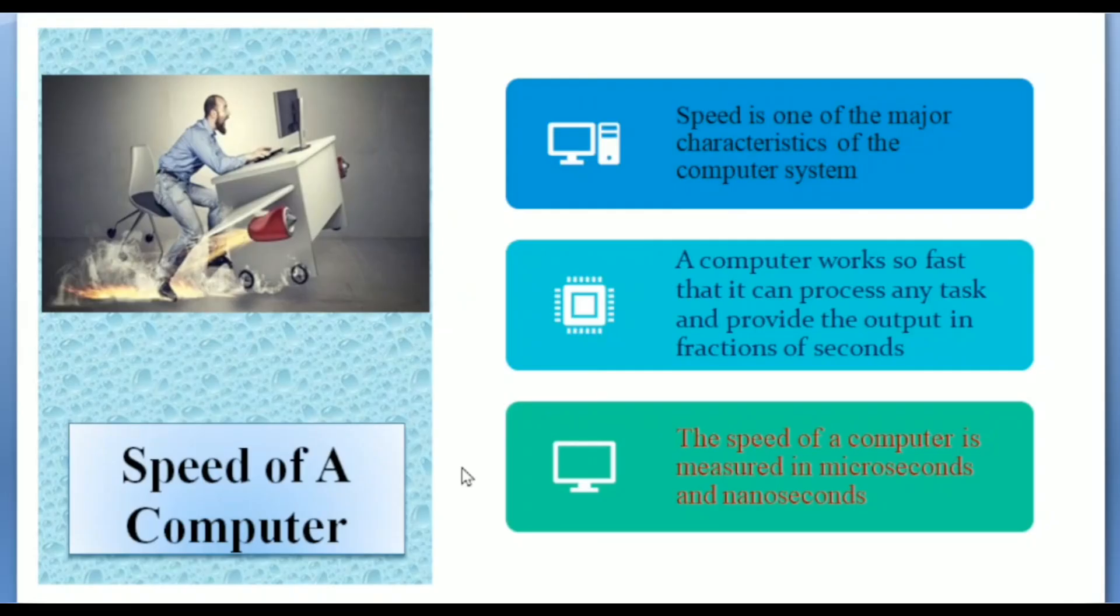Speed is one of the major characteristics of the computer system. A computer works so fast that it can process any task and provide the output in fraction of seconds, nearly microseconds and nanoseconds. A powerful computer can handle trillions of instructions per second, and this is quite remarkable compared to normal human work.